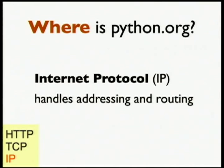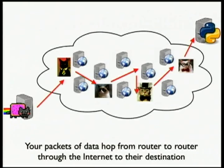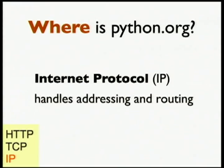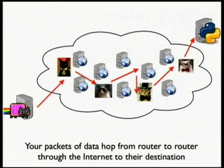That was our first question — the 'what.' The next question is 'where': where is python.org? There's a protocol for this as well — the Internet Protocol. The Internet Protocol's job is to handle addressing and routing throughout the Internet. The IP from 'IP address' is the same IP from 'Internet Protocol.'